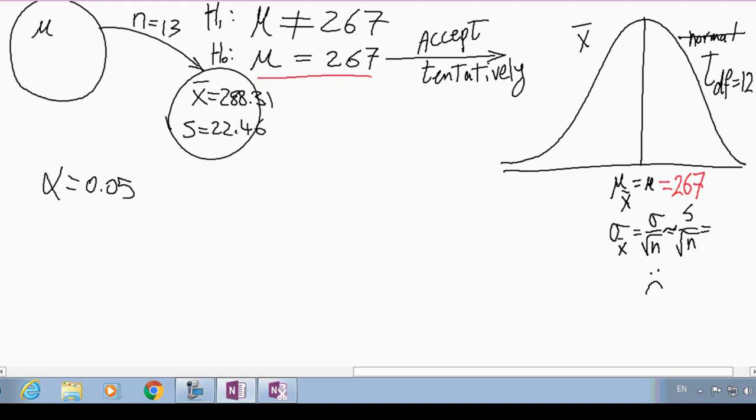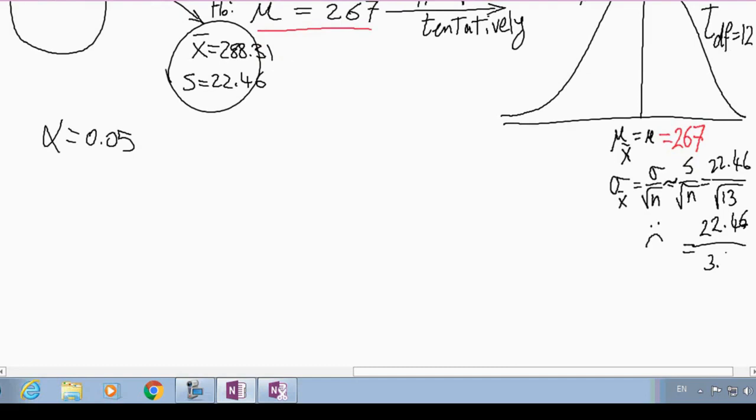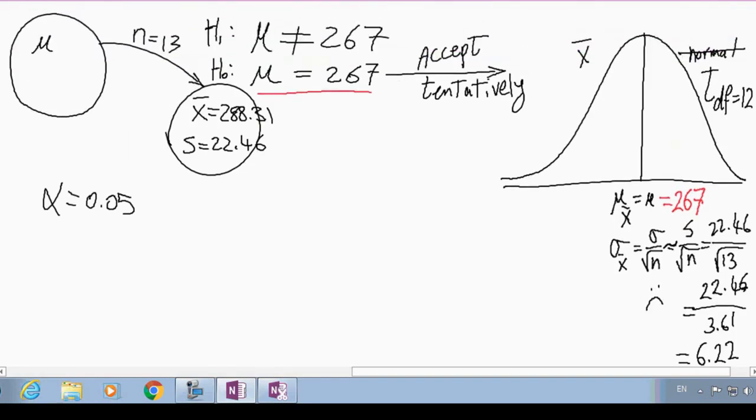So now, we can continue and we use this standard deviation of the sample, 22.46 divided by square root of 13, which is equal to 22.46 divided by what is the square root of 13? I got 3.61. So this is the standard deviation of distribution of x bar.